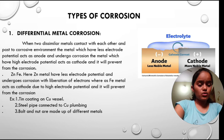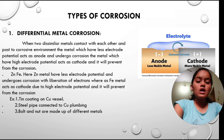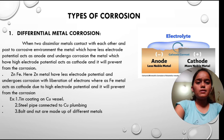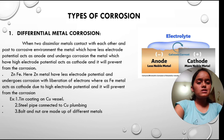Let us see the types of corrosion. There are two types of corrosion: differential metal corrosion and differential aeration corrosion. Let us see them one by one.